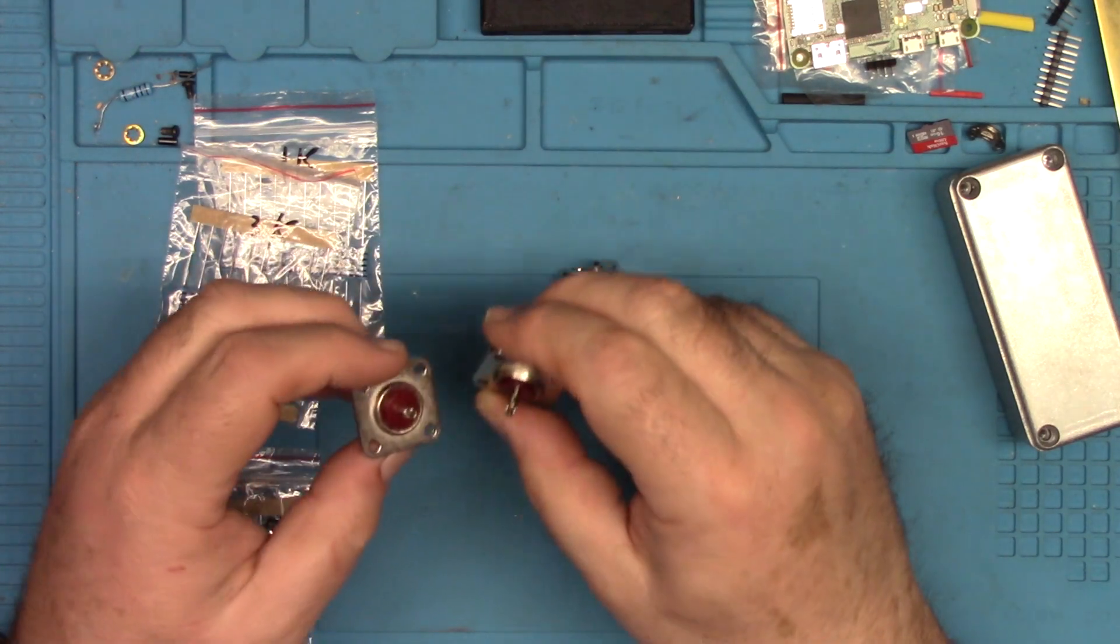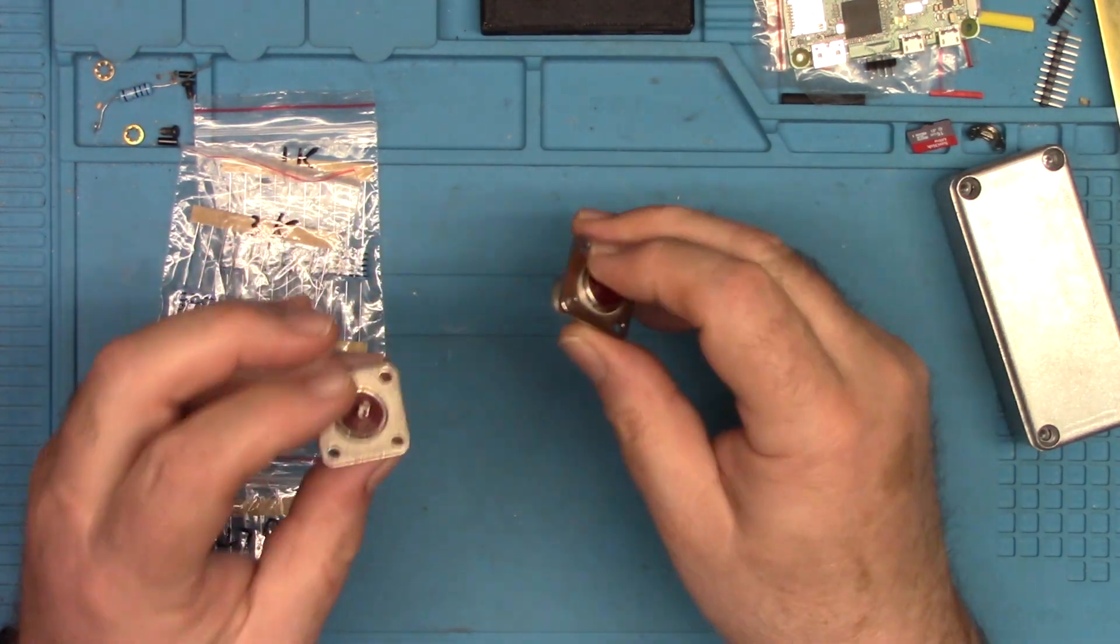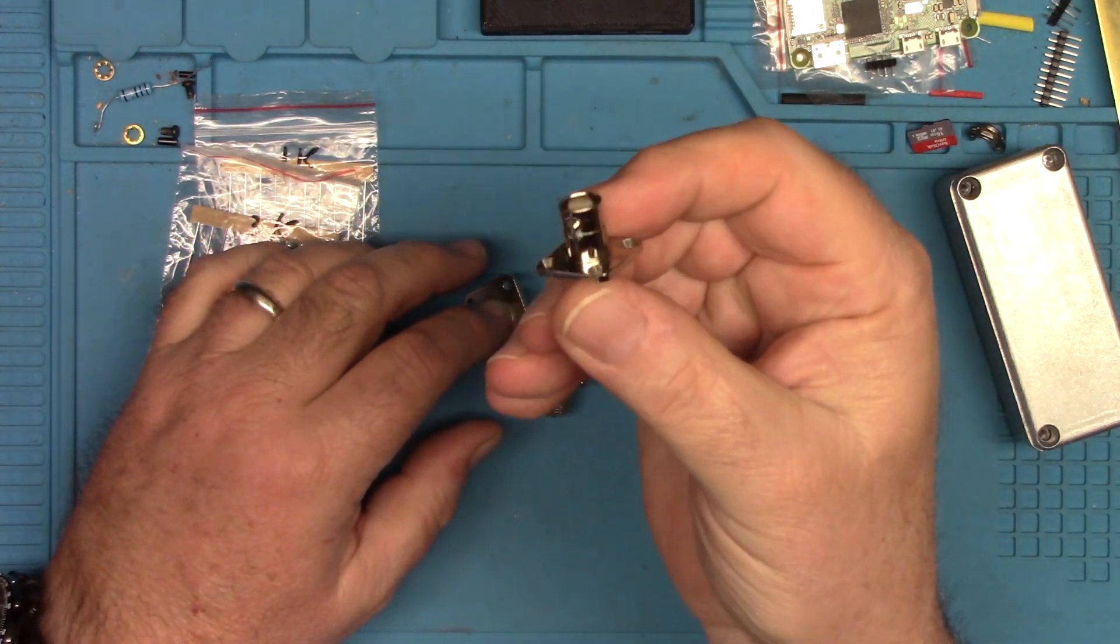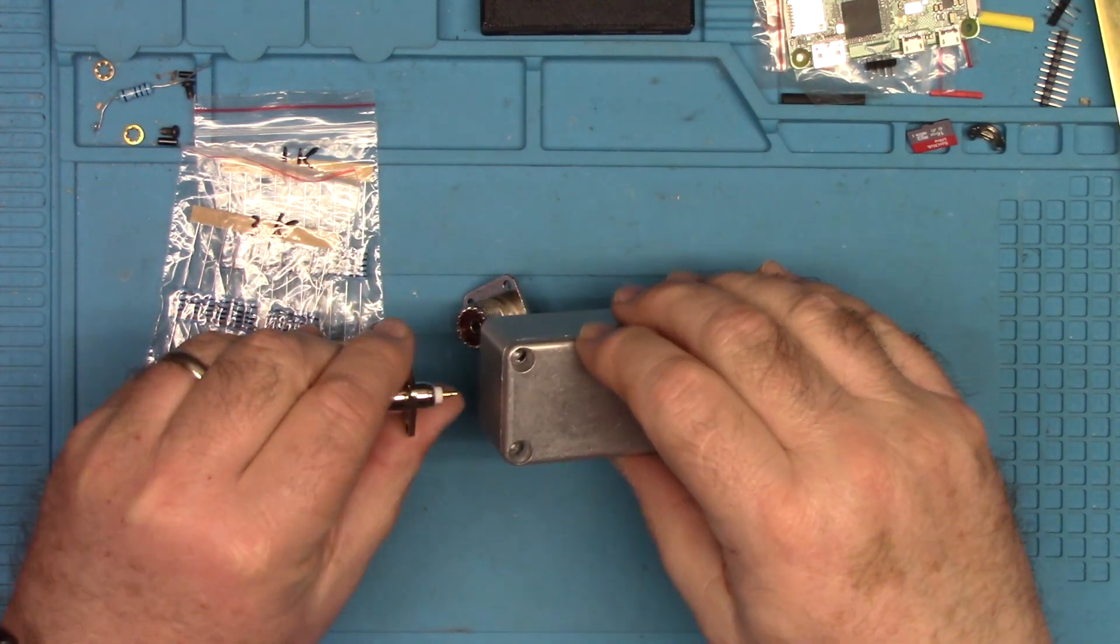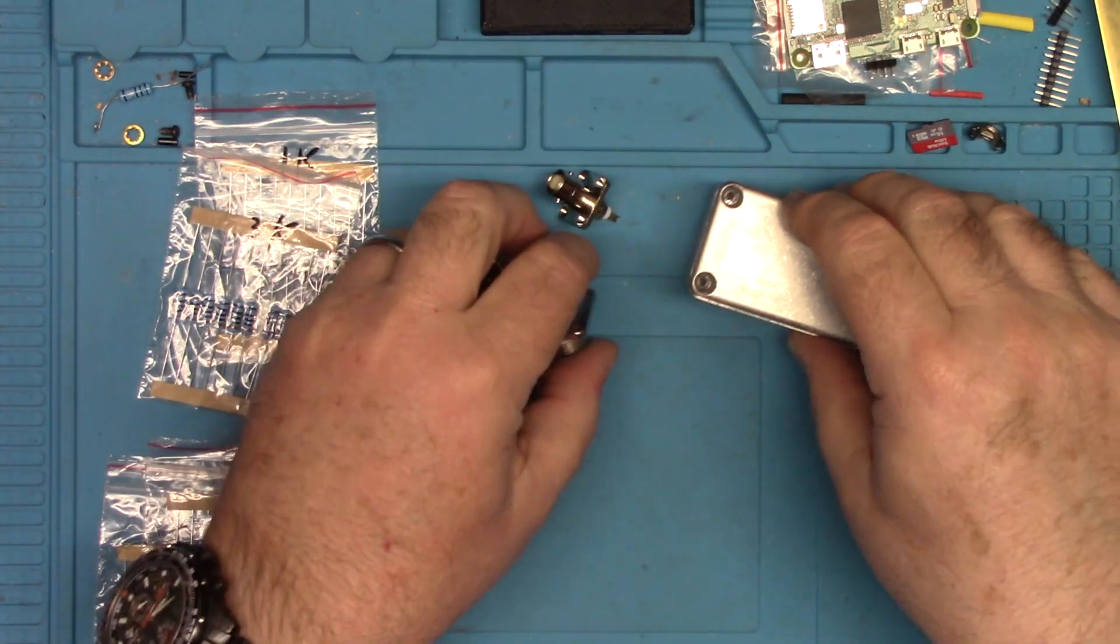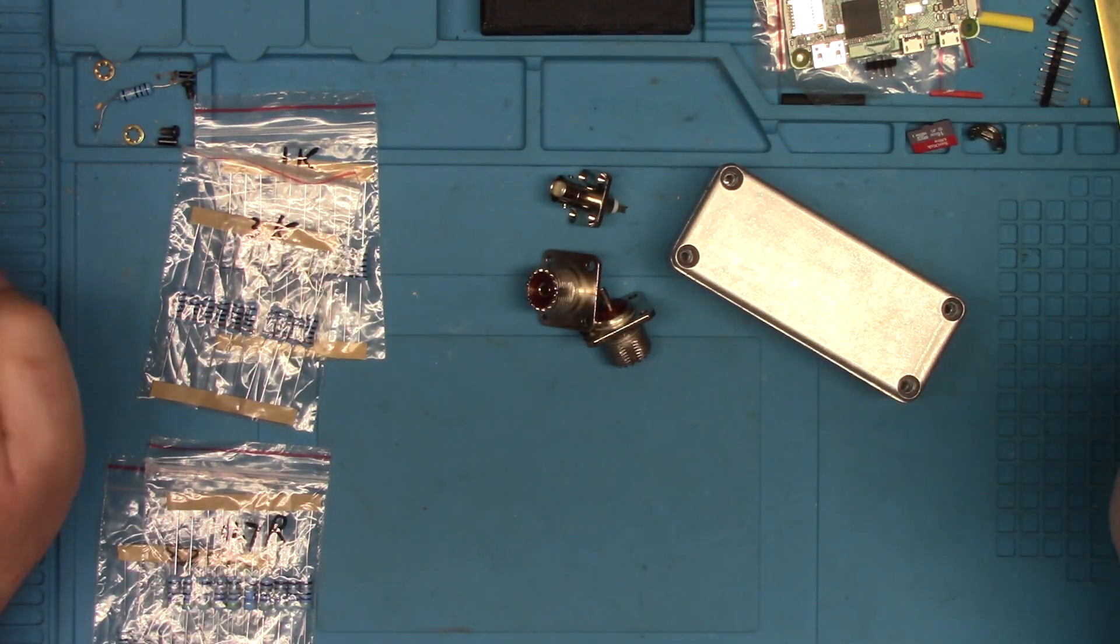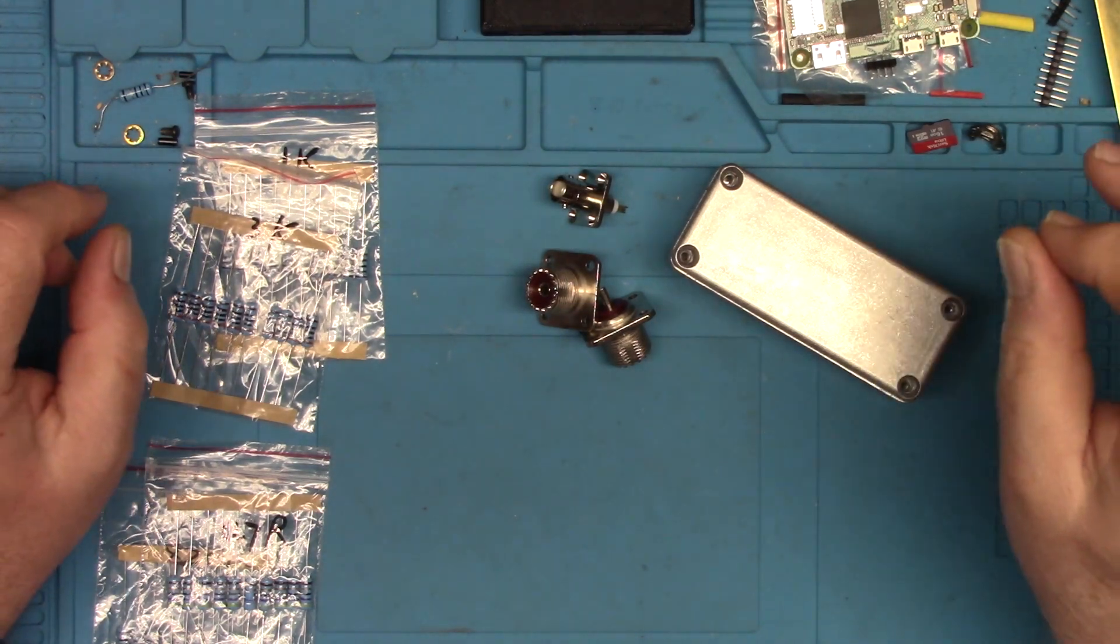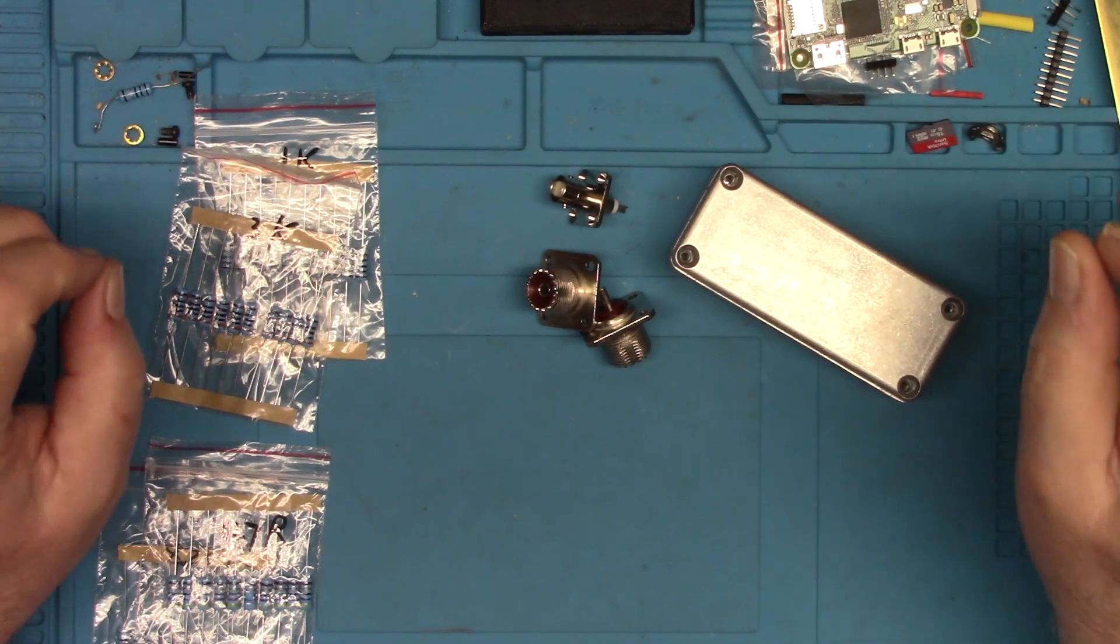Here's our connectors. Like I said, I'm going to use two SO239s. These will be mounted on the sides of the box and then here is a BNC and I'm going to put him on the end and this will be our tap port down there. Now, I'm going to vary from the official design documents just a little bit and I haven't decided which I'm going to do. I'll probably end up doing all three, but for now, here's what I wanted to say.